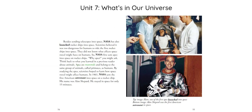Think back to what you learned in a previous reader about animals. Apes are mammals and belong to the same group of animals, called primates, as humans. By studying the apes, scientists hoped to learn how space travel might affect humans. In 1961, NASA sent the first American astronaut into space on a rocket ship. His name was Alan Shepard. He stayed in space for only 15 minutes.